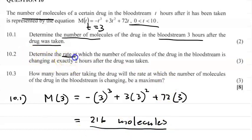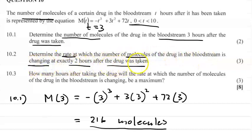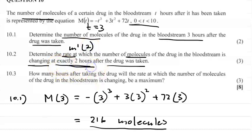10.2 says: determine the rate at which the number of molecules of the drug in the bloodstream is changing exactly two hours after the drug was taken. The word 'rate' means we need to find the derivative of the function. So we're going to find m'(T) and substitute T = 2.